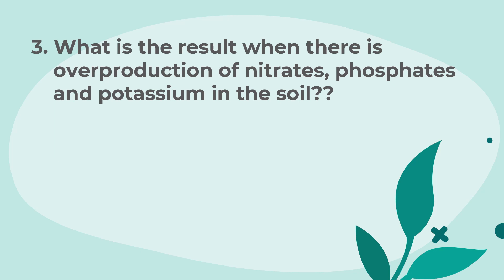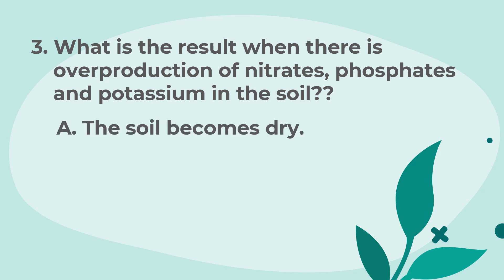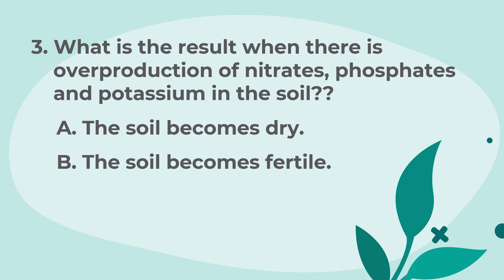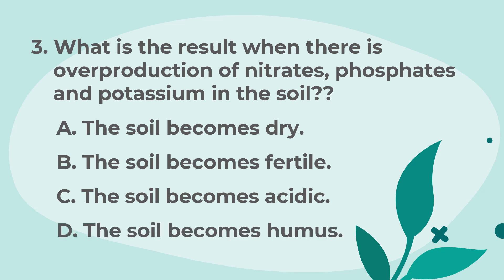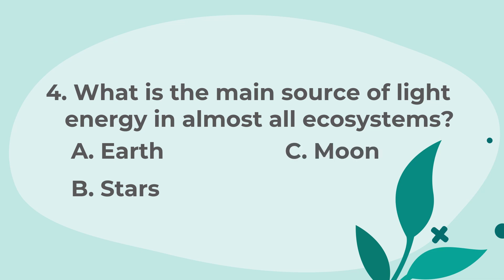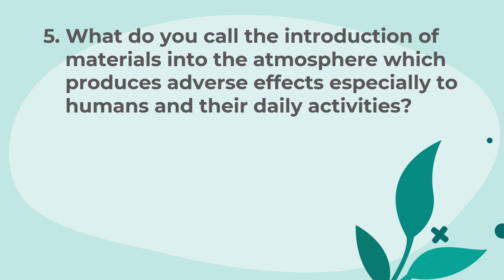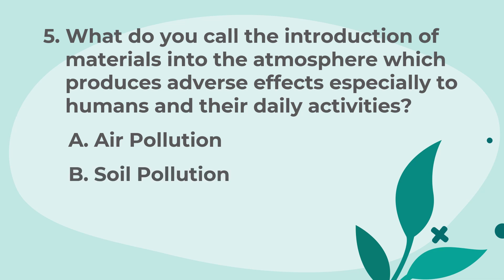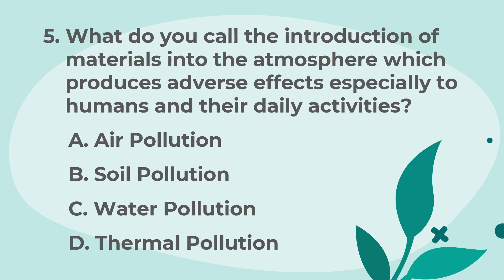3. What is the result when there is overproduction of nitrates, phosphates, and potassium in the soil? A. The soil becomes dry. B. The soil becomes fertile. C. The soil becomes acidic. 4. What is the main source of light energy in almost all ecosystems? A. Earth. B. Stars. C. Moon. D. Sun. 5. What do you call the introduction of materials into the atmosphere which produces adverse effects, especially to humans in their daily activities? A. Air pollution. B. Soil pollution. C. Water pollution. D. Thermal pollution.